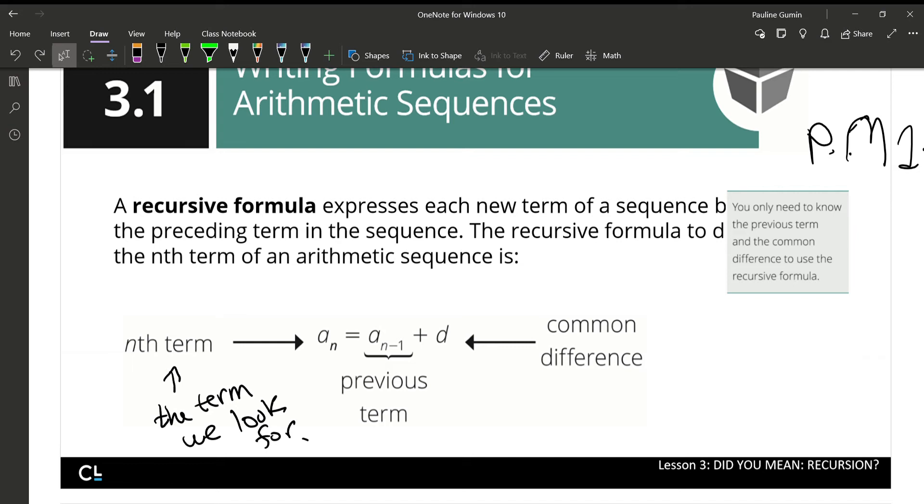The recursive formula goes as such. To find the term that we're looking for, a sub n, we have to add the common difference to the previous term. That might sound super familiar because we were actually doing this without the formula for the past couple of days. So you were using a formula without even knowing that it was a formula.